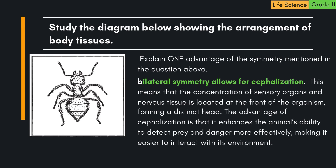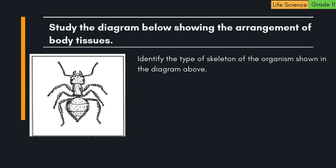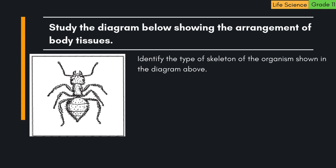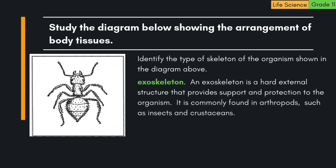Identify the type of skeleton of the organism shown in the diagram. The correct answer is exoskeleton. An exoskeleton is a hard external structure that provides support and protection to the organism. It is commonly found in arthropods, such as insects and crustaceans.